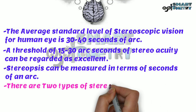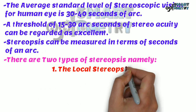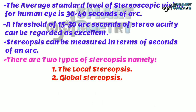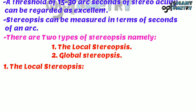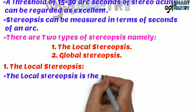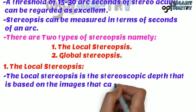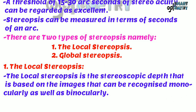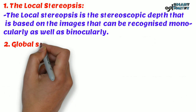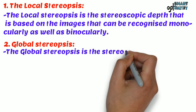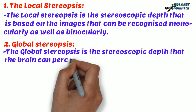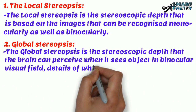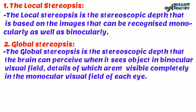There are two types of stereopsis: local stereopsis and global stereopsis. Local stereopsis is the stereoscopic depth that is based on images that can be recognized monocularly as well as binocularly. Global stereopsis is the stereoscopic depth that the brain can perceive when it sees objects in the binocular visual field, details of which aren't visible completely in the monocular visual field of each eye.